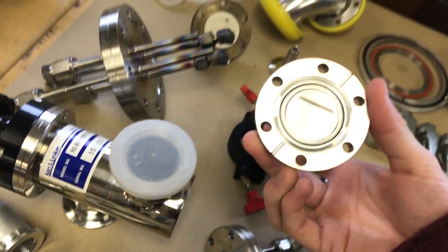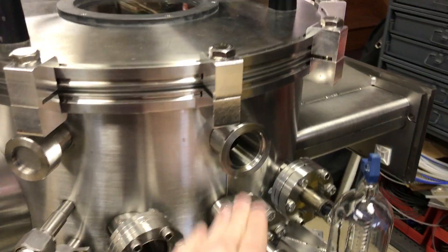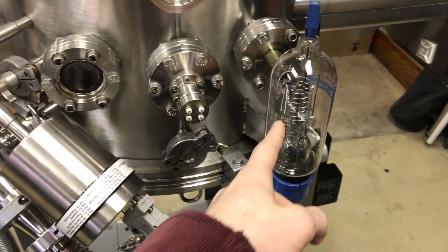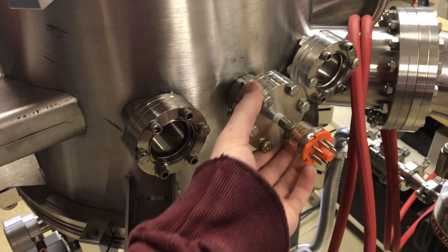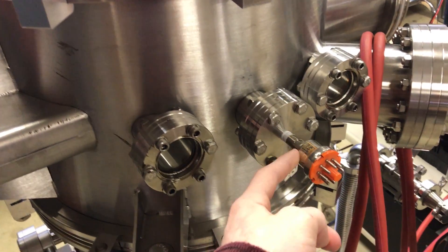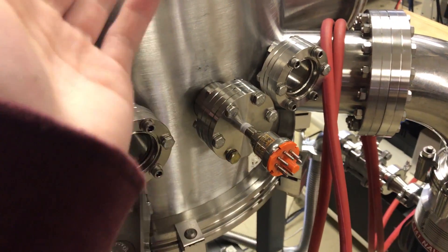So these conflats are really awesome seals. This is a two and three quarters. That's a pretty standard size. I have a few of those on my chamber here. These are all two and three quarters. I have a gauge on this one. And then on the other side, maybe this plate here is a two and three quarter to eighth inch NPT.